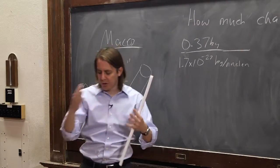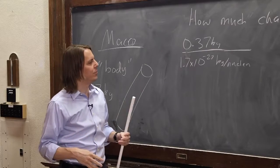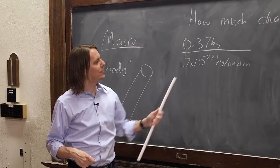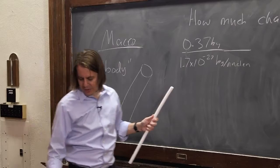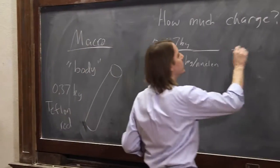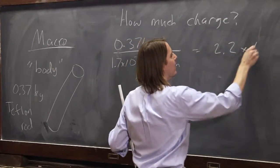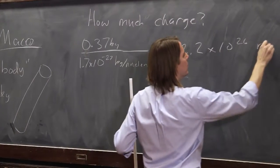If you're talking about one or the other, you call it a nucleon. Things that live in the nucleus. So we have our big mass divided by the mass of an individual nucleon. And you put those together and you get 2.2 times 10 to the 26 nucleons.